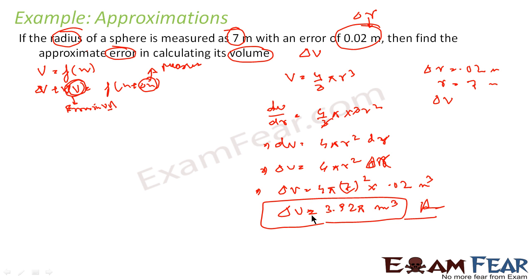So in this case also if you see, understanding the question was the difficult part. You need to understand by reading the question that you are asked to find error in calculating volume, that is to find delta V, where delta r is equal to 0.02, because the error in calculating radius is this much.